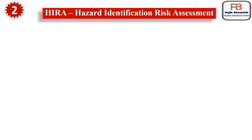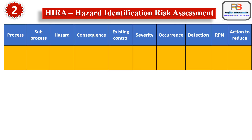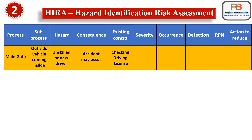Number two is HIRA, that is Hazard Identification Risk Assessment. I will explain this with a table, starting with main gate. Process is main gate, sub-process is outside vehicle coming inside the premises, hazard is unskilled or new driver, consequence is accident may occur inside the premises, existing control is checking of driving license. We give scores from 1 to 10: severity 3, occurrence 2, detection 1. RPN — Risk Priority Number — is the multiplication of severity, occurrence and detection. So 3 x 2 x 1 equals 6.